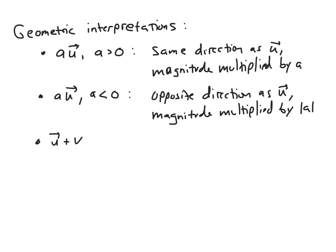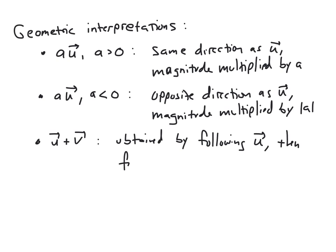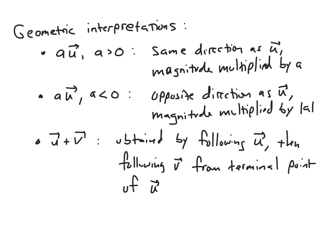For vector addition, u plus v is obtained by following u and then following v from the terminal point. The idea is we start at the origin, move in the direction of u for the magnitude of u, and then from that point we follow vector v — going in that direction for the magnitude of v.